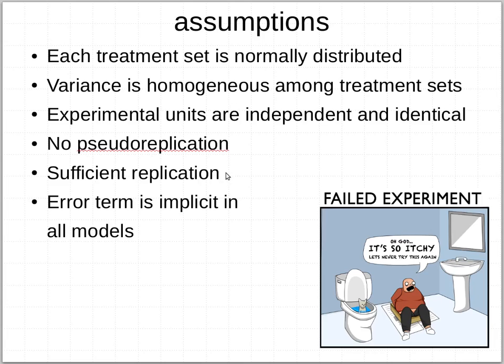We're also assuming that there's sufficient replication. Three is a minimum to be able to talk about a decent average; with only two, your statistics would fail. In some cases, especially in field studies, you need a lot more replication than that to represent the variation that might occur in your data. An error term is often implicit in models — it may not be expressly stated, but it's there and we should remember that.